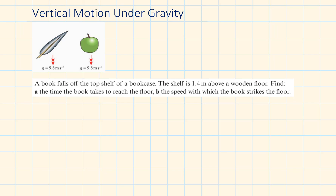Hi and welcome to this lesson on vertical motion under gravity. The force of gravity causes all objects to accelerate towards Earth. If we completely ignore air resistance, the acceleration is constant and doesn't depend on the mass of the object. This means that if we release a feather and an apple from the same height, they will hit the ground at the same time.